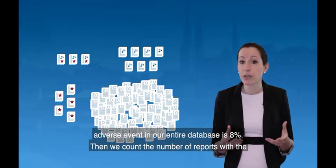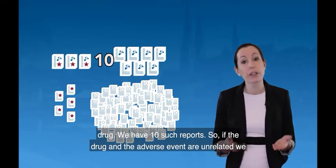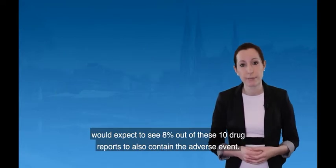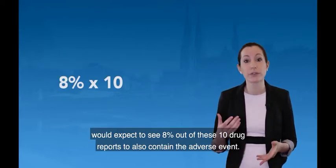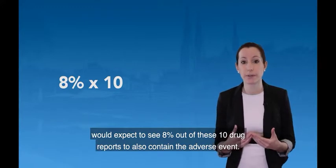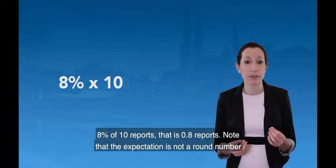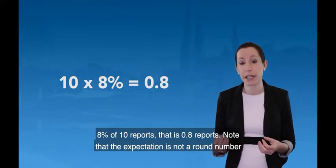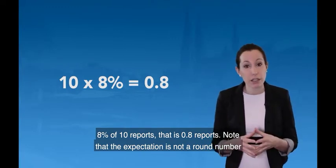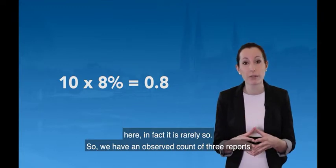Then we count the number of reports with the drug — we have 10 such reports. So if the drug and the adverse event are unrelated, we would expect to see 8% out of these 10 drug reports to also contain the adverse event. 8% of 10 reports is 0.8 reports. Note that the expectation is not a round number here — in fact, it is rarely so.